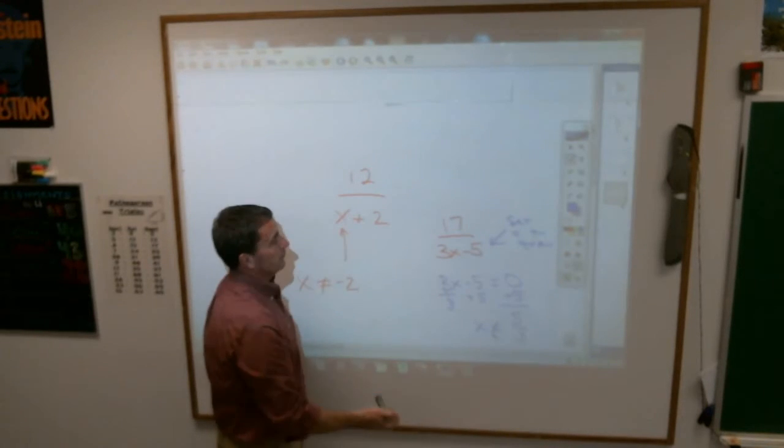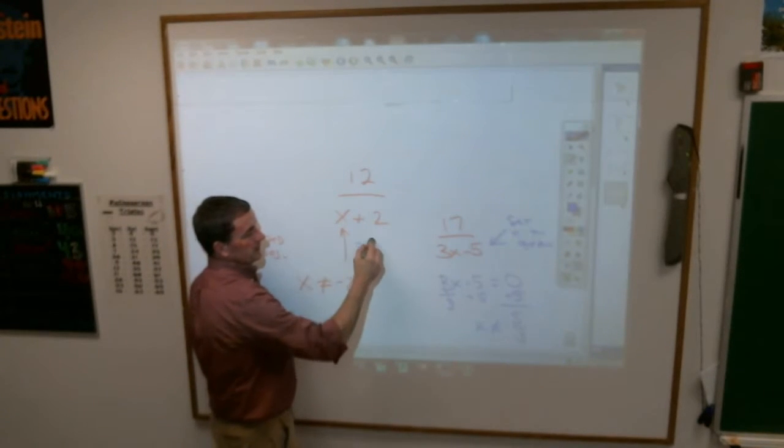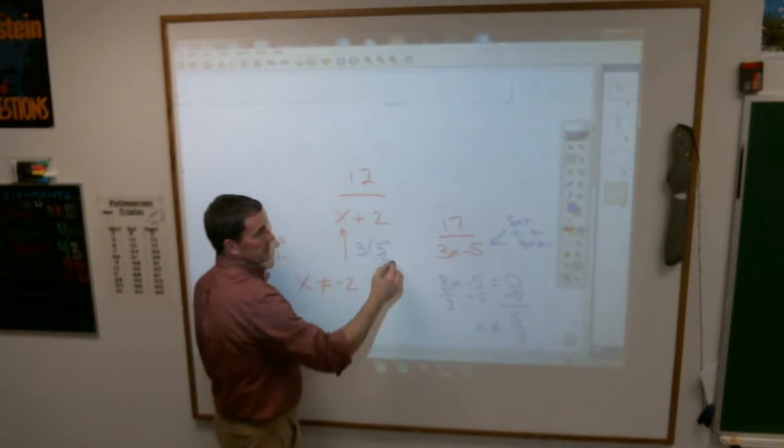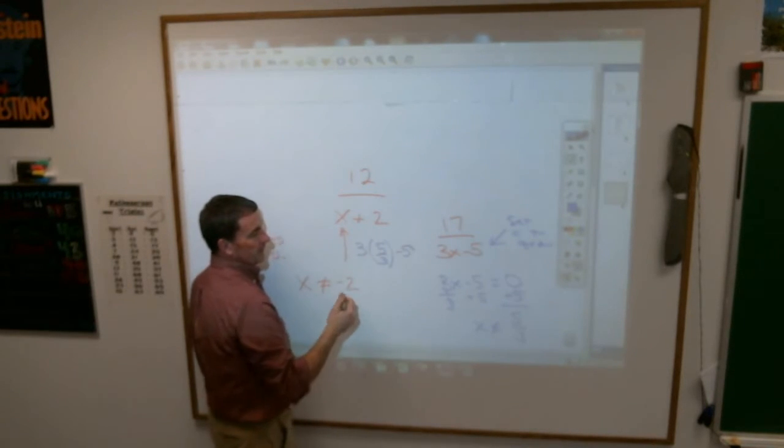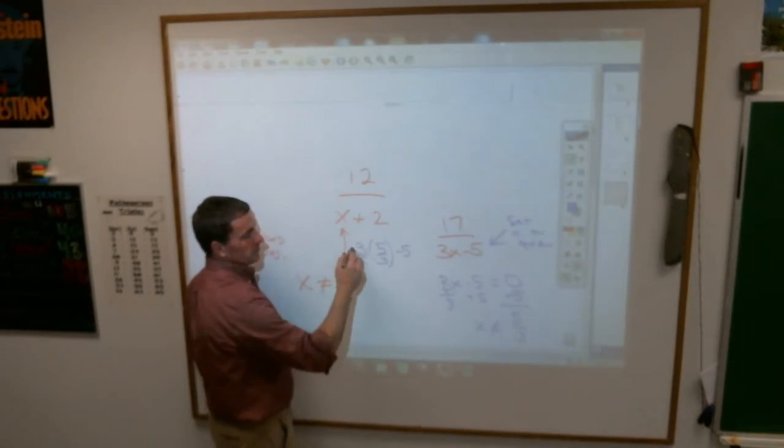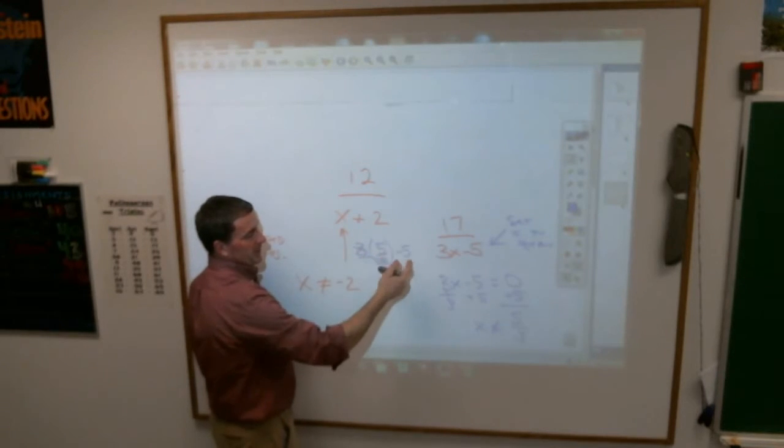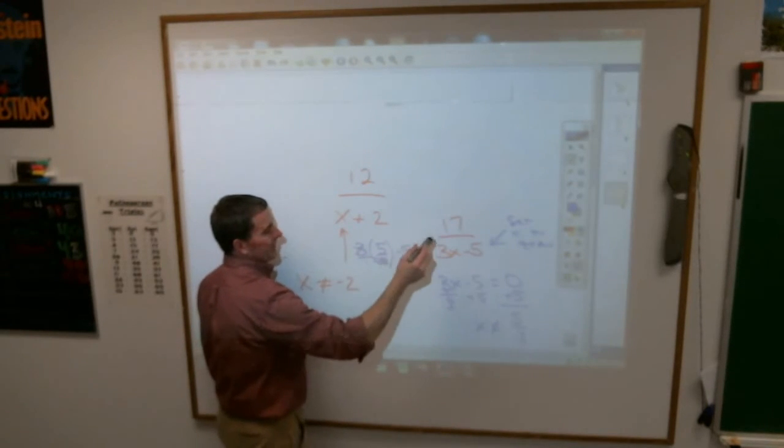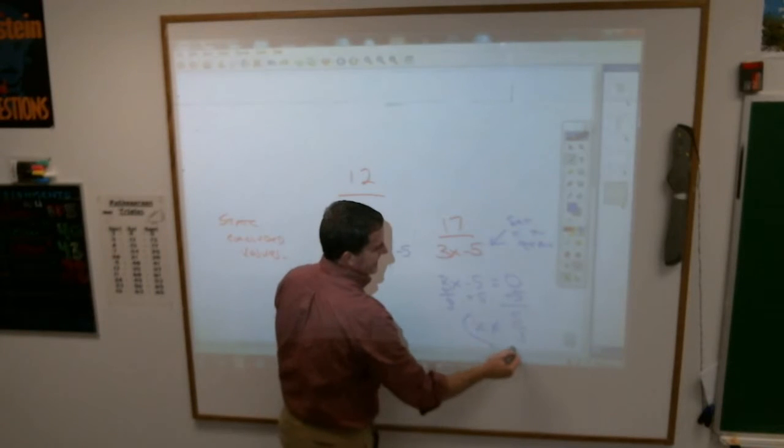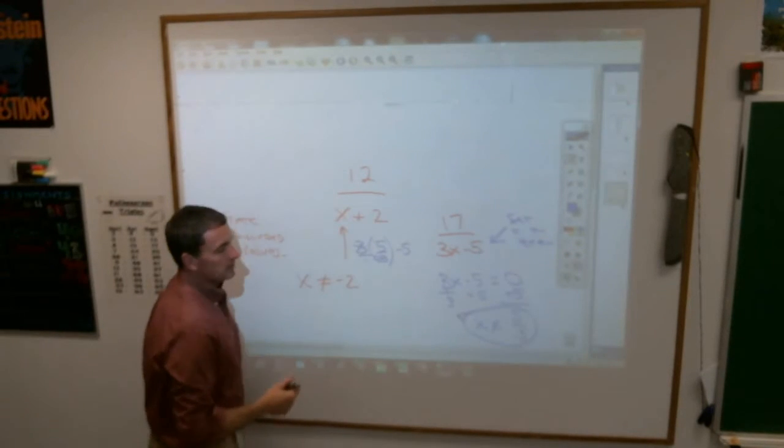You say, prove that. I will prove that. Three times five-thirds minus five. What do I get if I do that problem? Well, the threes cross off. Five minus five is zero, and you can't have that. So x cannot equal five-thirds.